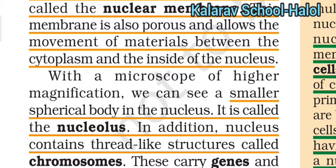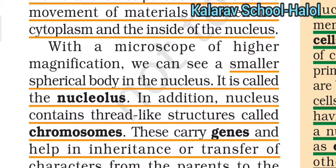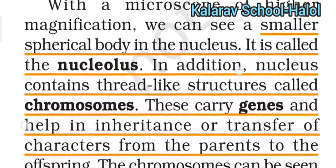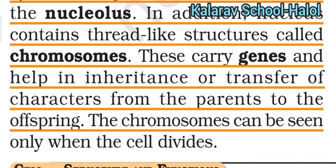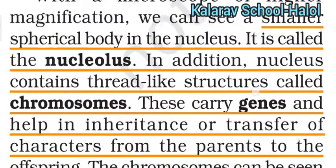The small spherical body in the nucleus is called the nucleolus. So the layers from outside in are: cell wall (in plants only), cell membrane, cytoplasm, nuclear membrane, nucleus, and then the nucleolus inside the nucleus. The nucleus contains thread-like structures called chromosomes. Chromosomes carry genes and help in the transfer of characters from parents to offspring. Chromosomes can be seen only when the cell divides.